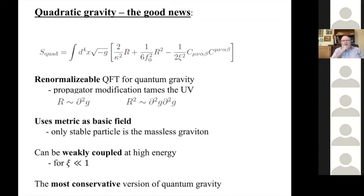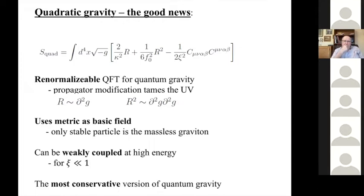The theory includes not only the curvature but curvature-squared terms. The C is the Weyl tensor, which is just some combination of curvatures. Since the curvatures go like two derivatives, curvature-squared goes like four, and the extra powers of momentum in the propagators tame the UV behavior and make it renormalizable. The curvature-squared terms have dimensionless coefficients — they govern the UV behavior, and if you do loops with them using dimensional regularization, you get the same curvatures back again.